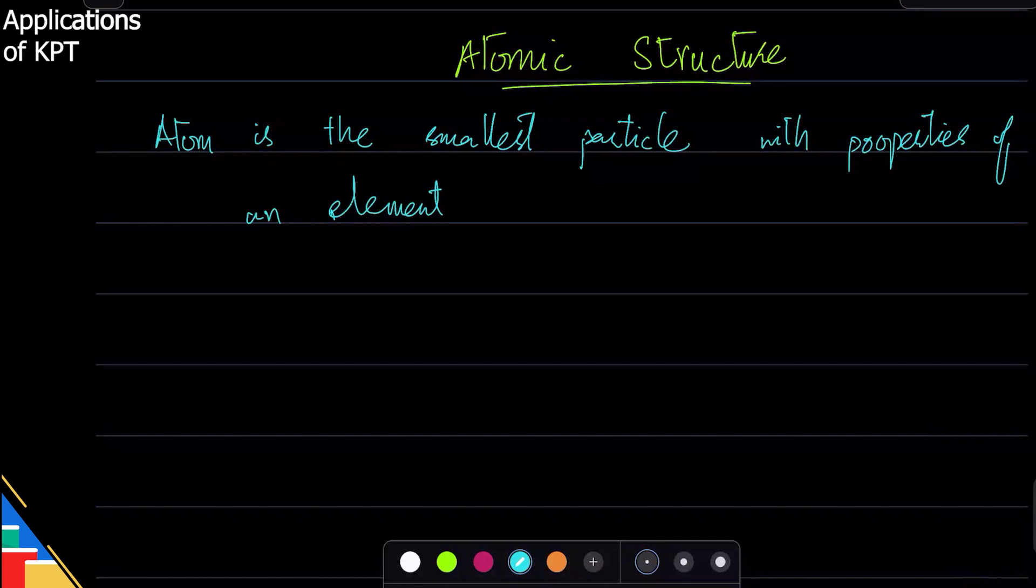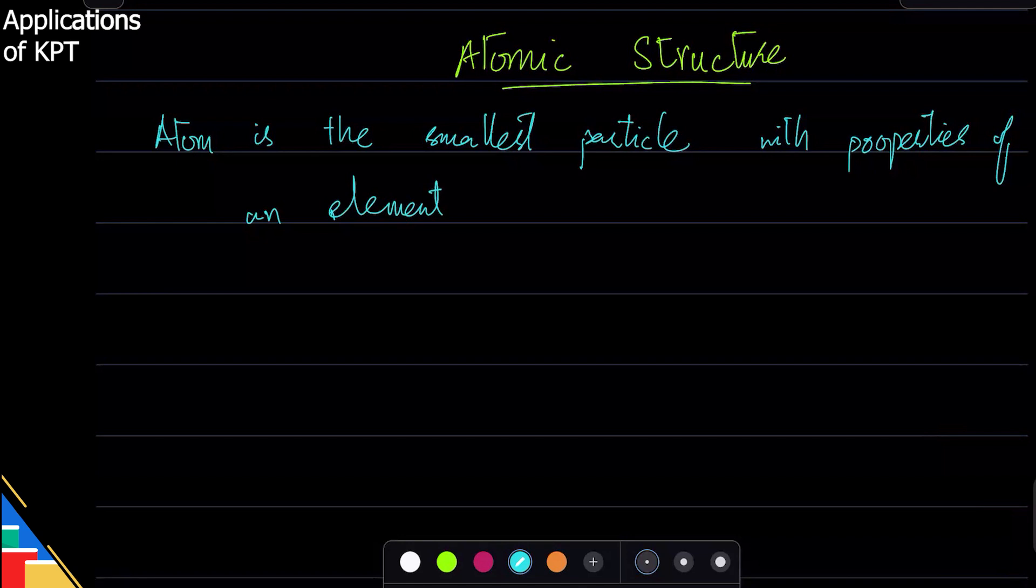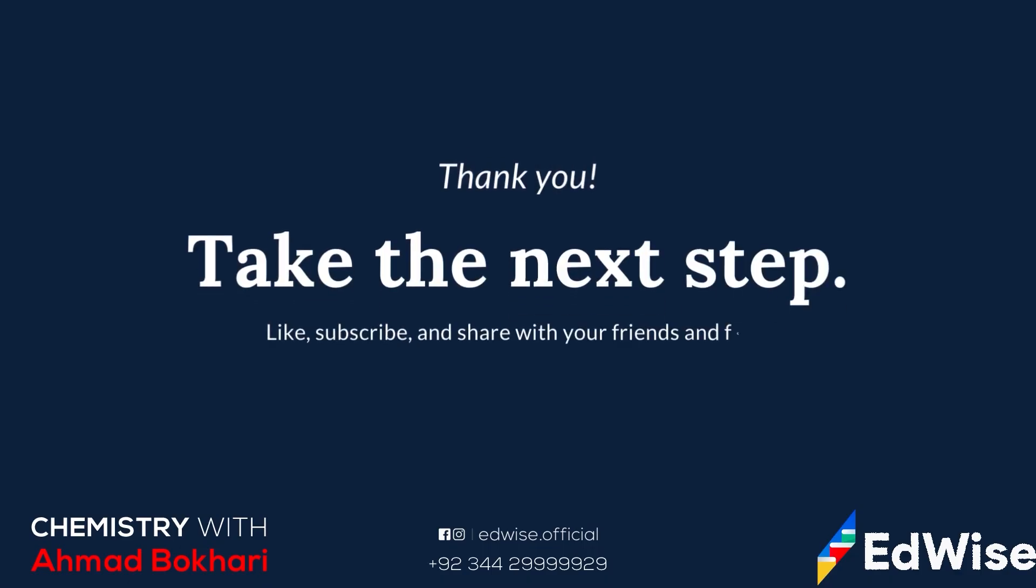What atom is not is the smallest particle of all time. Why? Because in an atom, there are protons, neutrons, electrons, and many, many different other particles. Over 200 particles, by the way. So that's the thing. You do not say that atom is just the smallest particle. It is the smallest particle with properties of an element.